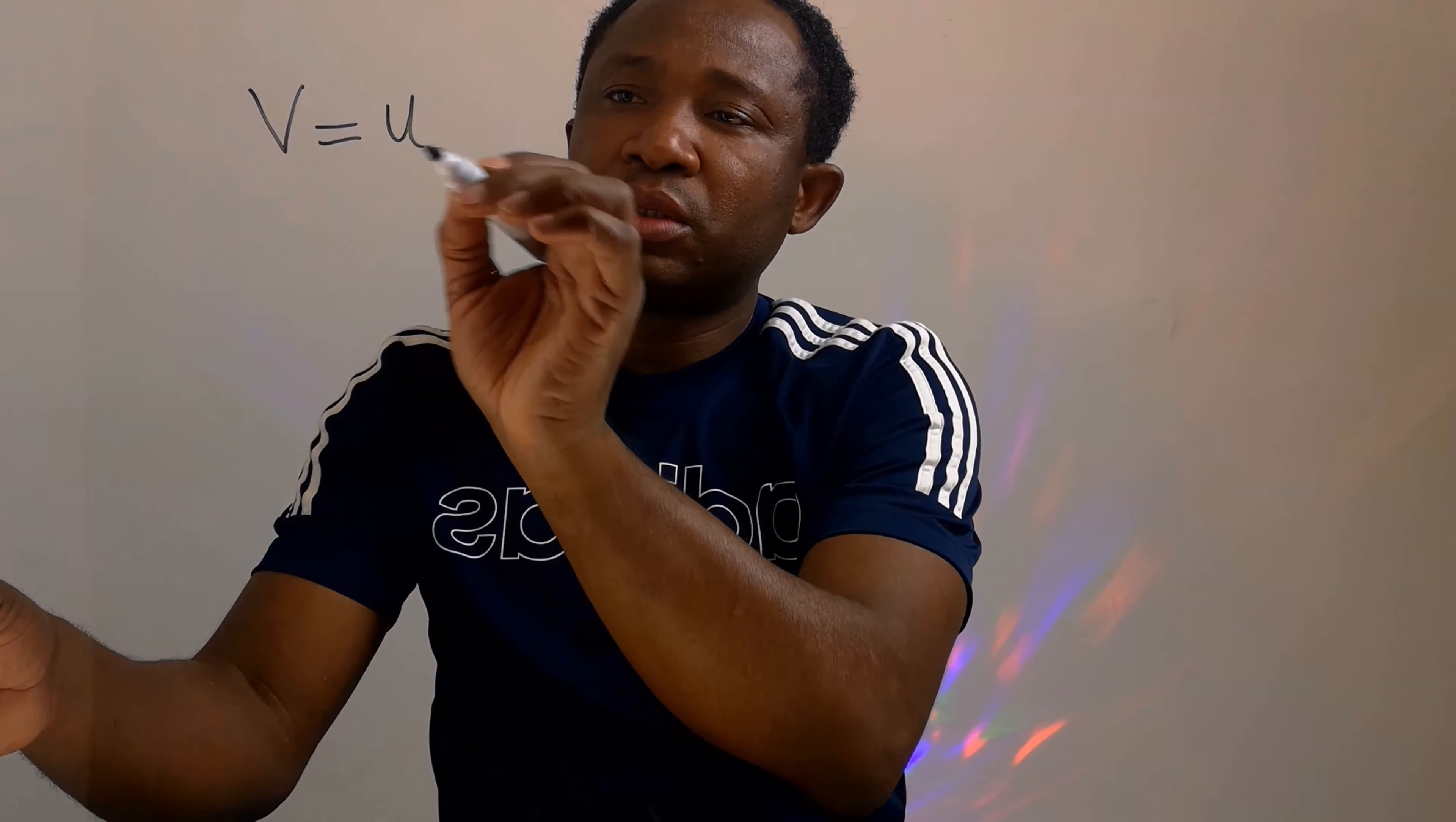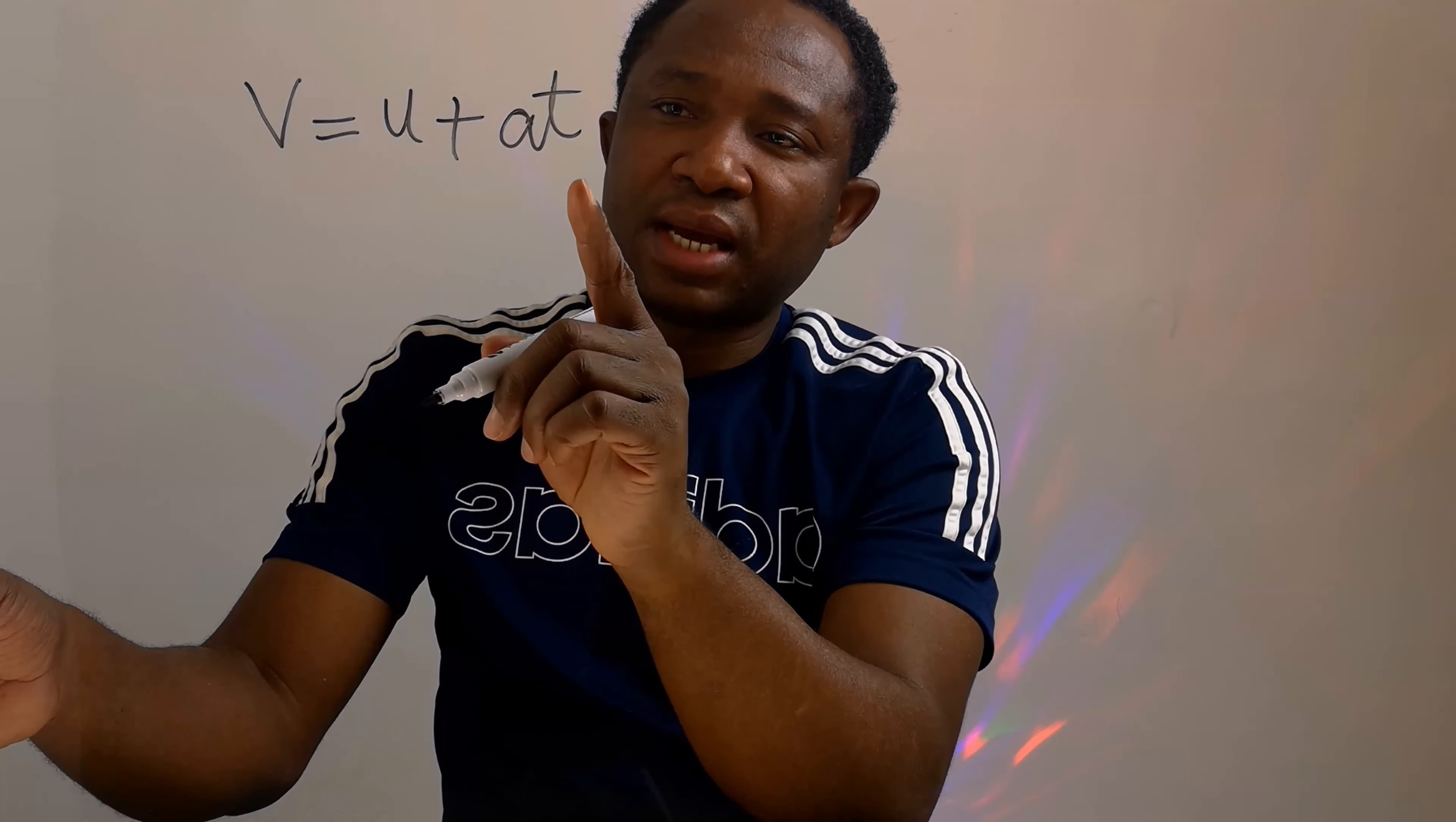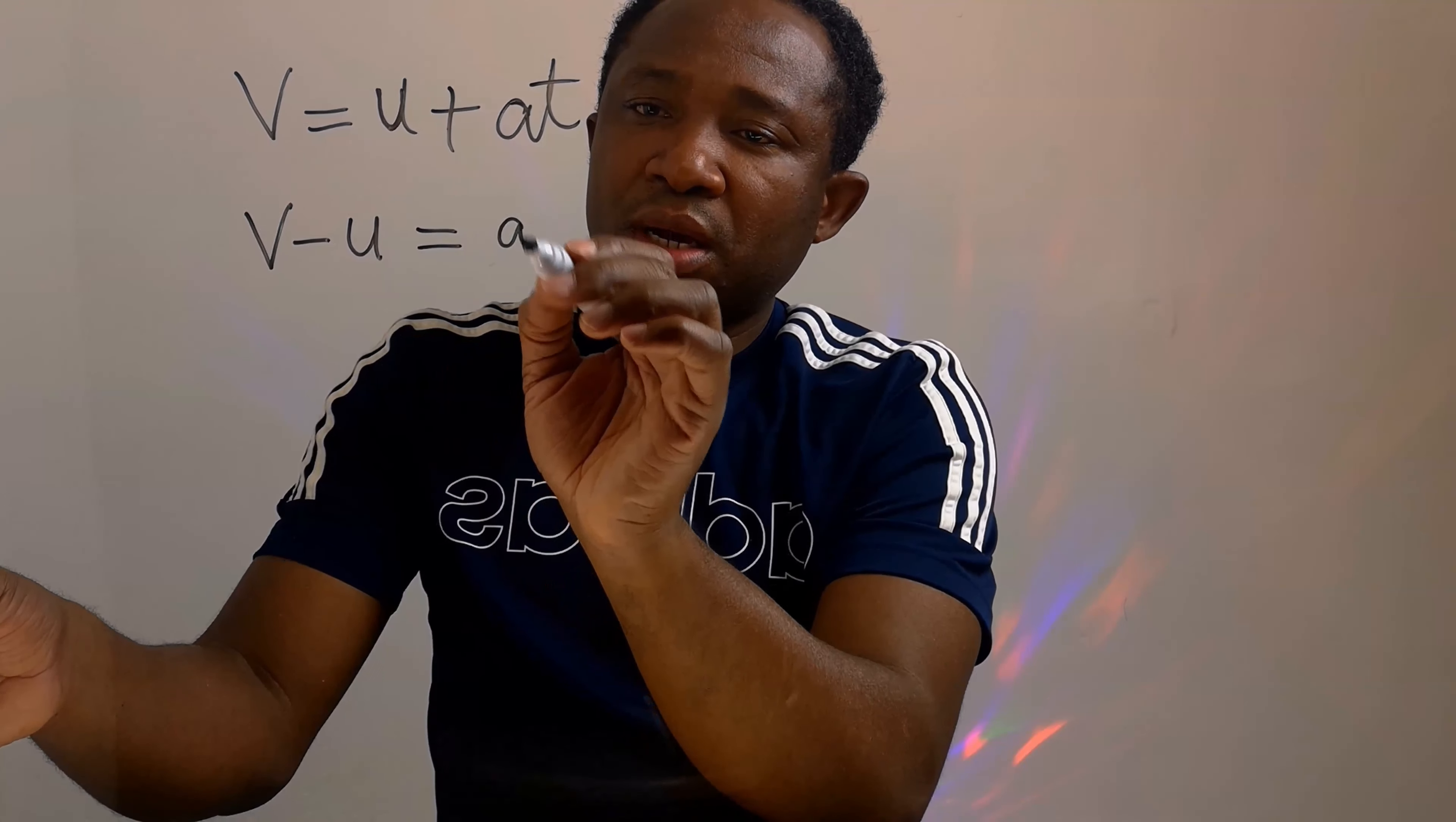v equals u plus at. We want to isolate a. u and t will leave this side here. We're going to have v minus u. This u is plus on the other side, it becomes minus here. We still have at.